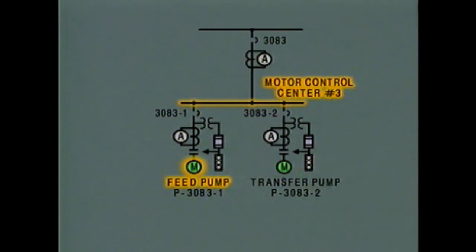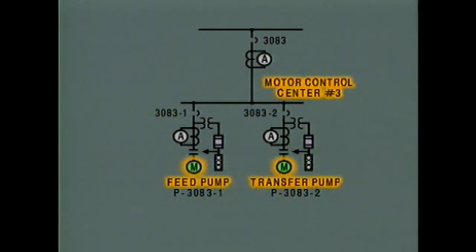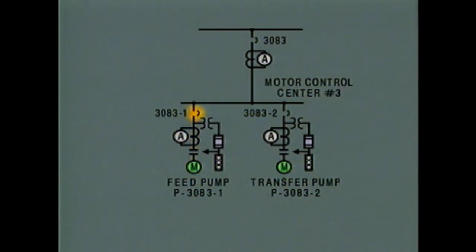However, the motor control center also feeds the transfer pump motor. We must isolate the feed pump motor in such a way that the transfer pump can continue to operate. By tracing the power path back from the feed pump motor, we can find the breaker that's used to isolate the feed pump motor circuit. Opening this breaker isolates the feed pump motor while the other motor in the system remains energized.